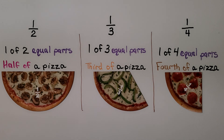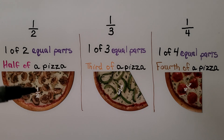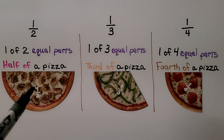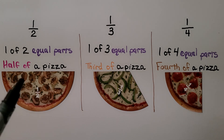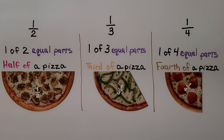You can see this is in fewer parts — there are only two parts. It's one of two parts, so this is a much larger piece of pizza than the fourth. This was split into four parts, and this was split into only two parts, so this has greater size parts than the fourth or the third.